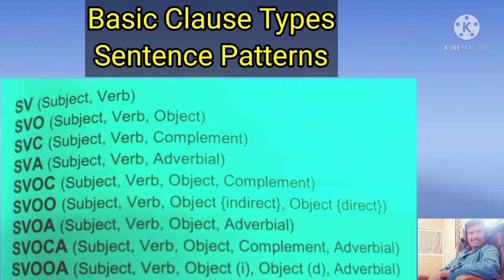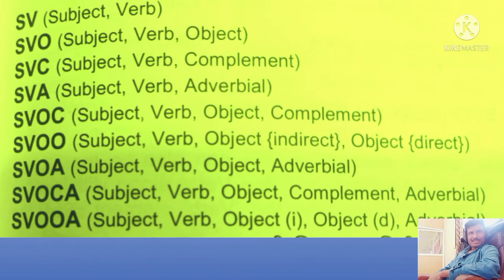It is commonly believed that there are 7 basic clause types, but in this video we will talk about 9 basic clause types. These 9 basic clause types are: S-V, S-V-O, S-V-C, S-V-O-C, S-V-O-O, S-V-O-A, S-V-O-C-A, and S-V-O-O-A. These are the acceptable possible combinations of S-V-O-C-A, i.e. subject, verb, object, complement, and adverbial in English.